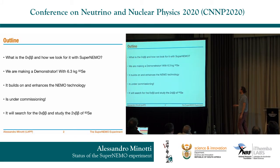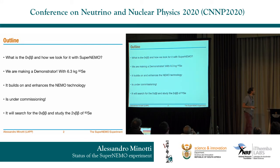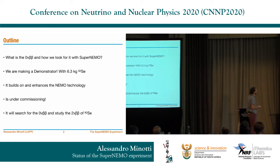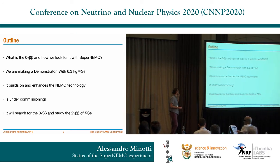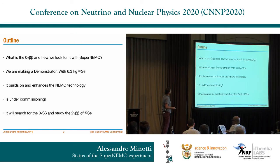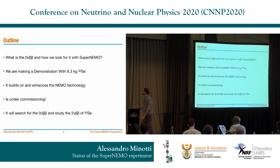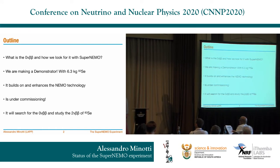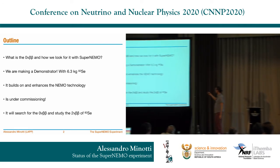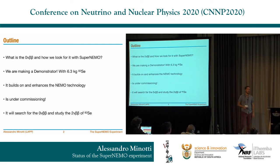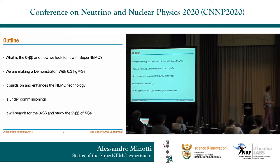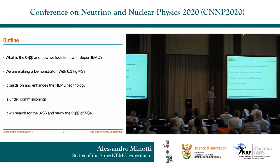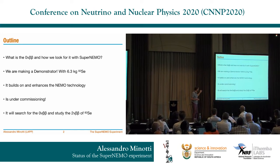This is the title of my talk. I will start by describing briefly what neutrinoless double beta decay is and how we want to look for it with the SuperNEMO technology. I will move on to the demonstrator — we are making a demonstrator with 6.3 kilos of selenium-82 to study this interaction — and how this demonstrator builds on the technology of NEMO3. Then I will describe the commissioning of this detector and the physics scope.